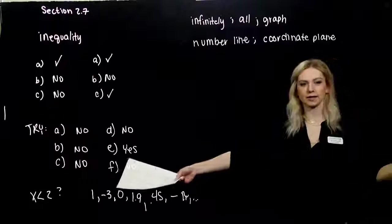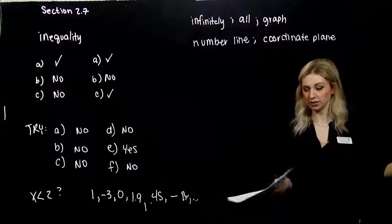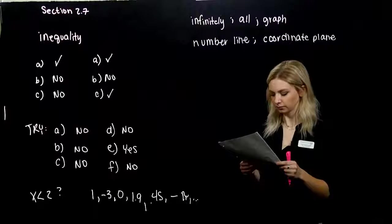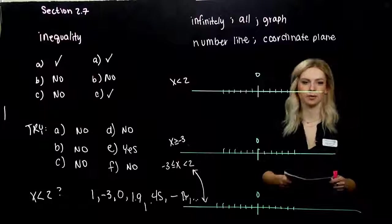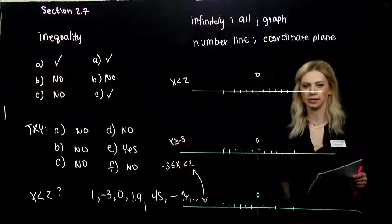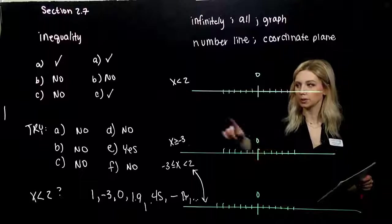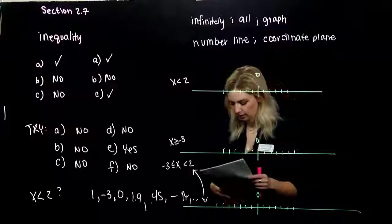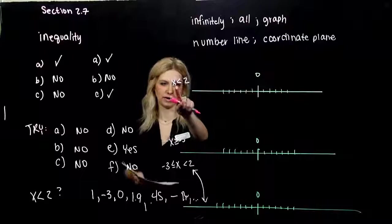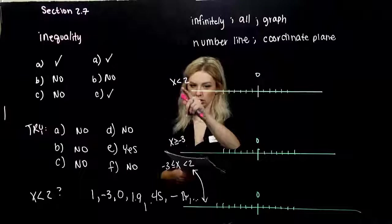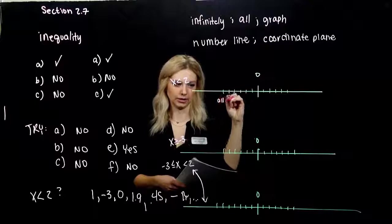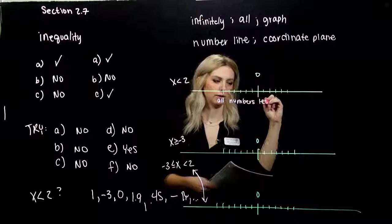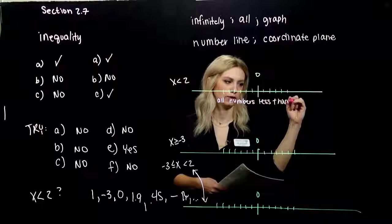We're going to take that example, x less than two. We know what some of the solutions are, and we want to graph them. Now that we've got some number lines to draw on. Again, one-dimensional, we only have that one variable involved, so we can draw it on a number line. What does it mean when we're graphing x less than two? We're trying to graph all numbers that are less than two.